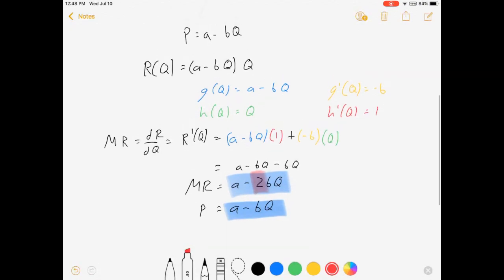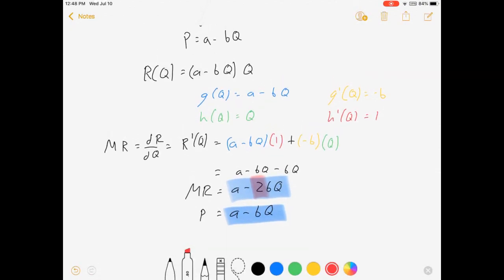It comes out of this calculus with the product rule. You've got an a minus bq that happens here, and you're subtracting an additional bq there. And so, the slope will double. Now, that's only true if the line is straight, but whatever, I digress.